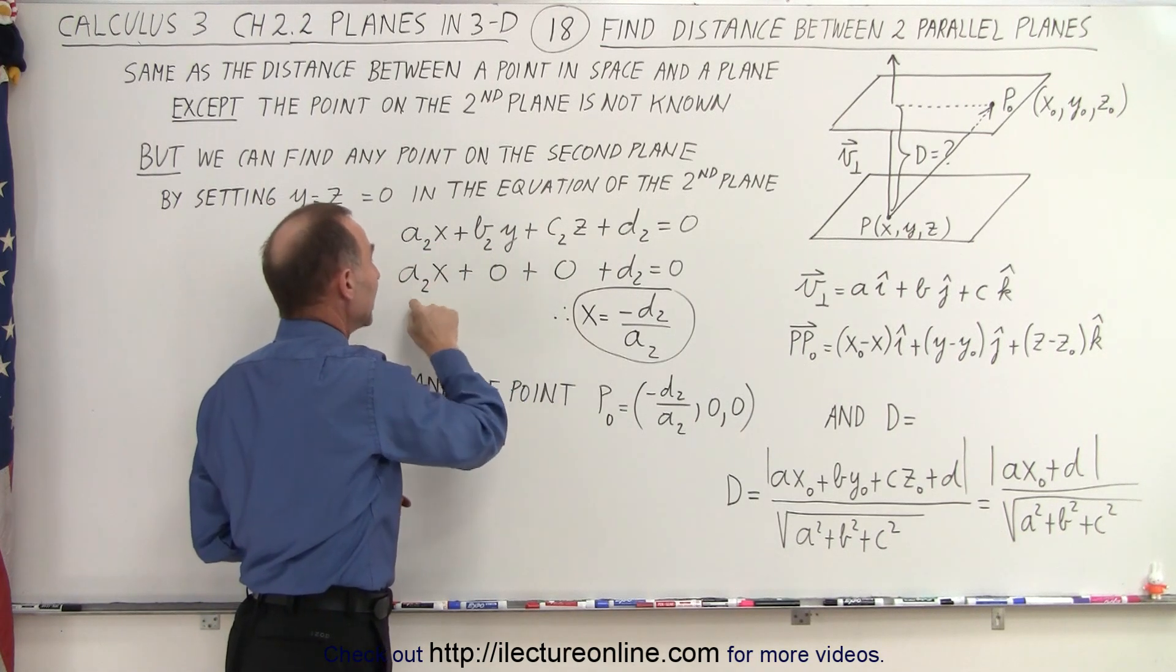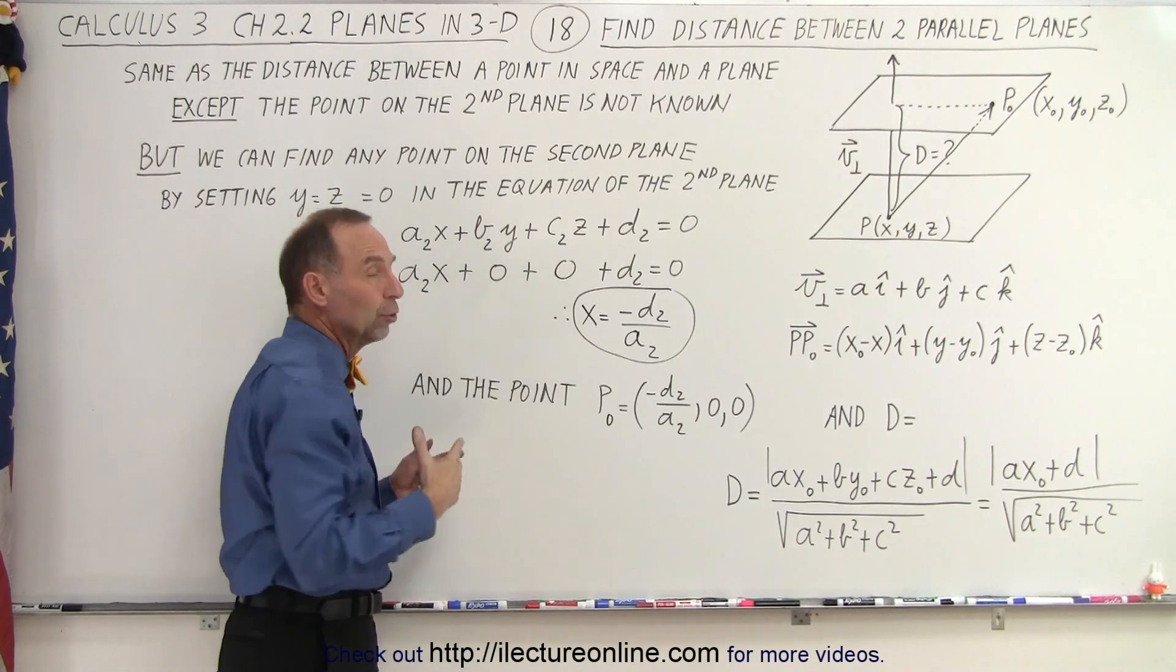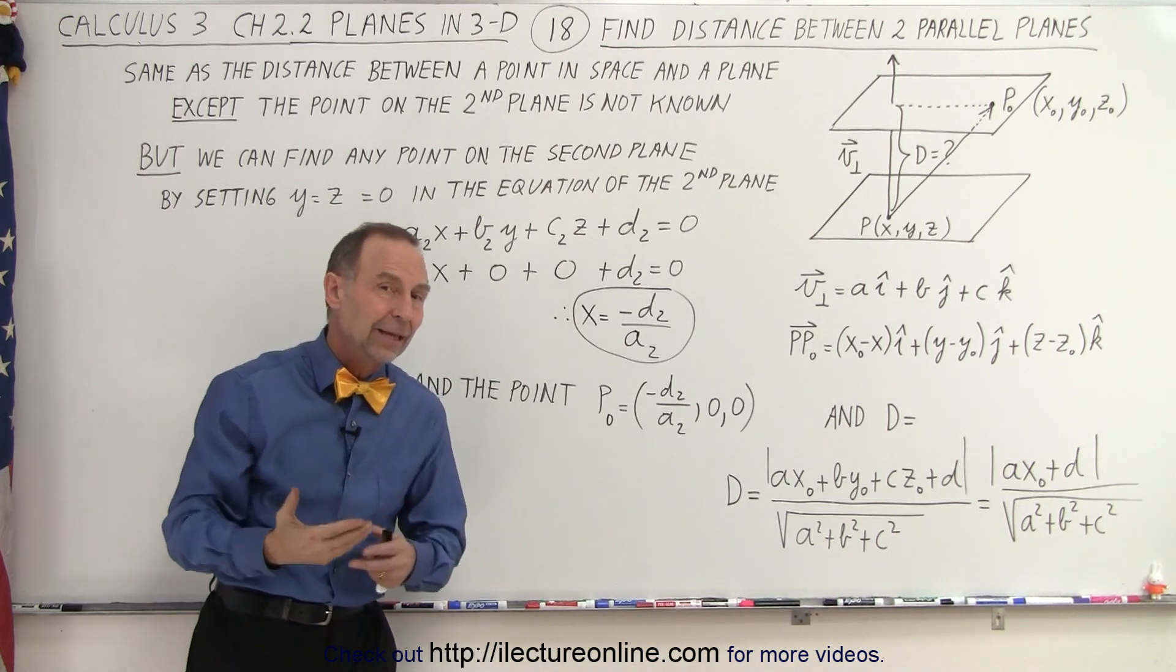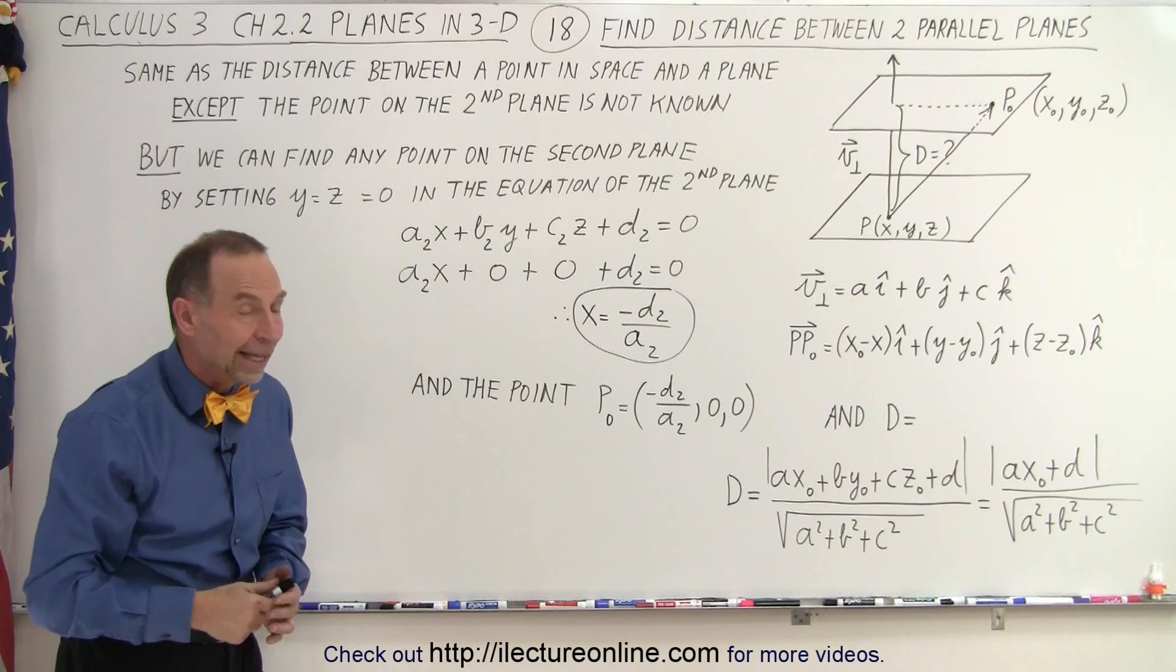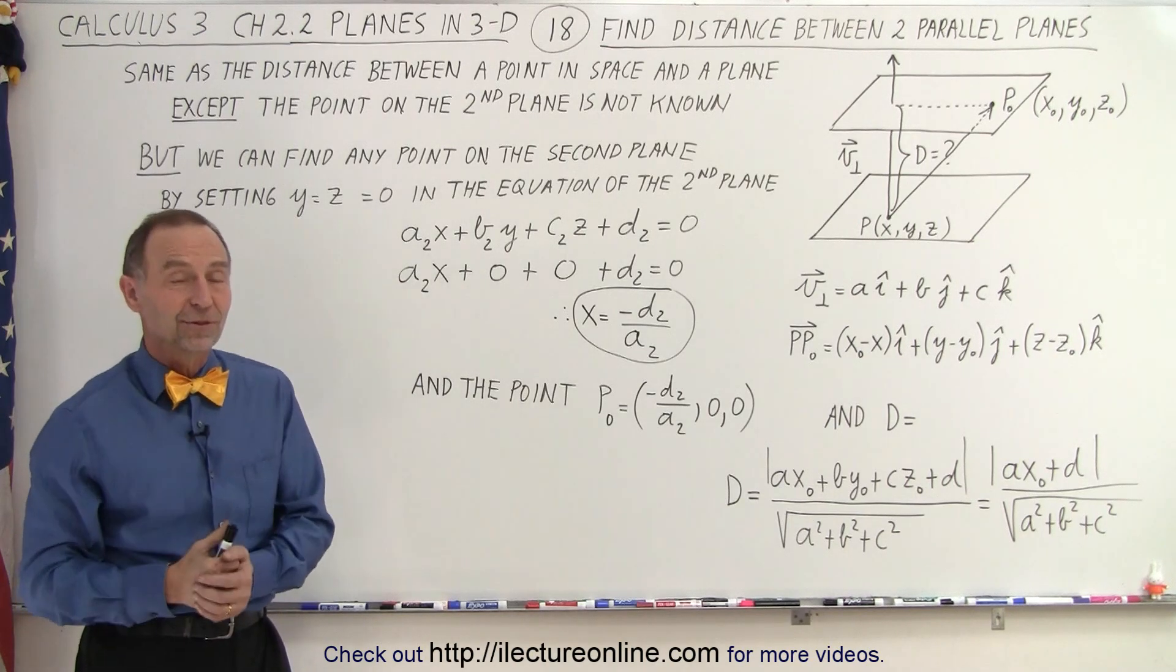Now, it doesn't have to be Y and Z. It could be X and Y or X and Z. Two of the three will do. And then we'll be able to solve it in the exact same way. And that is how it's done.